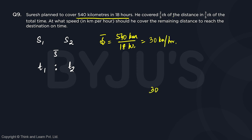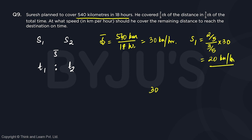Since he covers 2 fifths of the distance in 3 fifths of the total time, his first speed is going to be 2 fifths out of 3 fifths of 30 kilometers per hour, which gives us 20 kilometers per hour. So the first speed is 20 kilometers per hour.